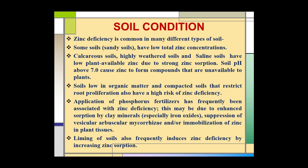Application of phosphorus fertilizer has frequently been associated with zinc deficiency. This is due to enhanced sorption by clay minerals, suppression of vesicular-arbuscular mycorrhiza, and/or immobilization of zinc in plant tissue. Liming of soils also frequently induces zinc deficiency by increasing zinc sorption.